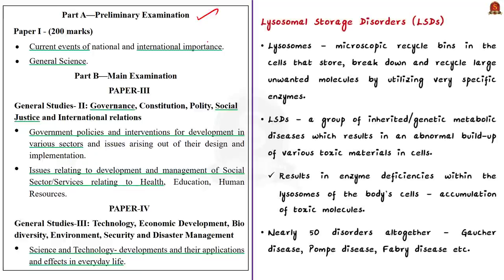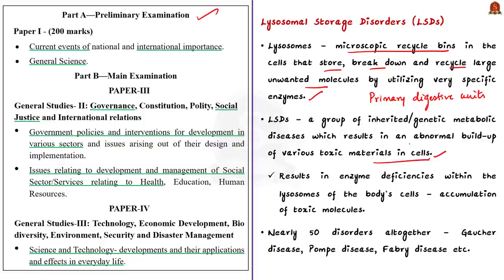Lysosomes are the microscopic recycle bins in cells — they store, break down, and recycle large unwanted molecules by utilizing very specific enzymes, functioning as the primary digestive units within cells. Lysosomal storage disorders are a group of inherited or genetic metabolic diseases which result in an abnormal buildup of very toxic materials within the body's cells. LSD results in enzyme deficiencies within the lysosomes, meaning enzymes become deficient or defective and unable to digest large unwanted molecules. There are nearly 50 of these disorders, including Gaucher disease, Pompe disease, and Fabry disease.